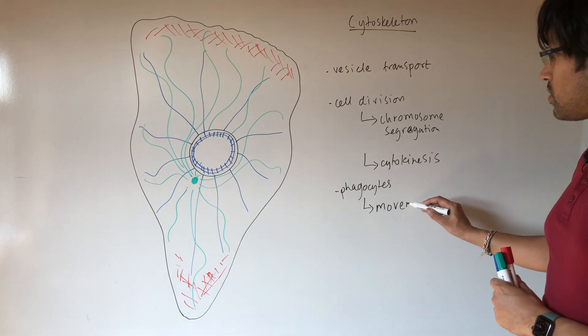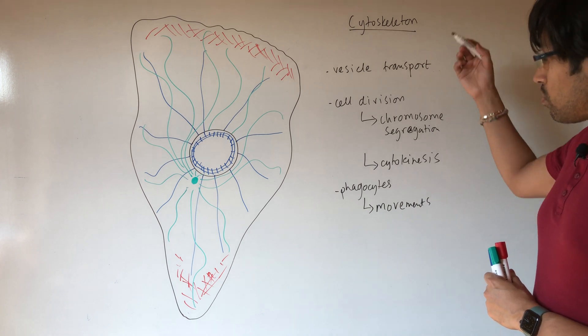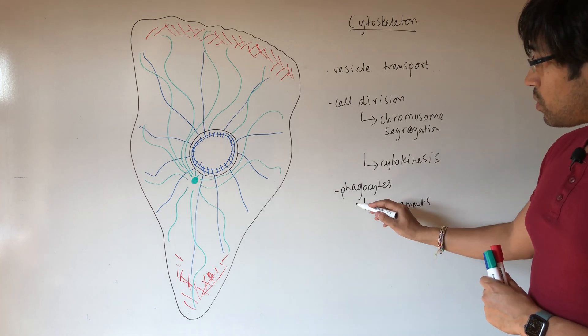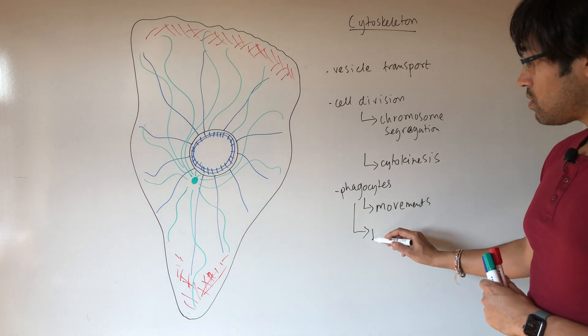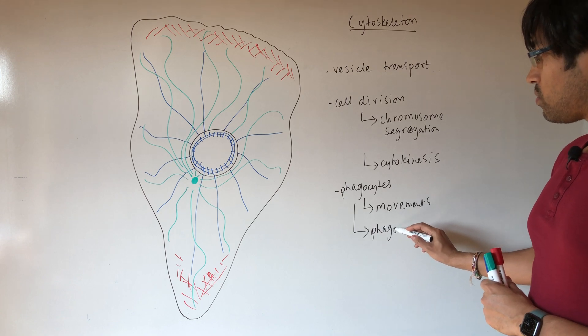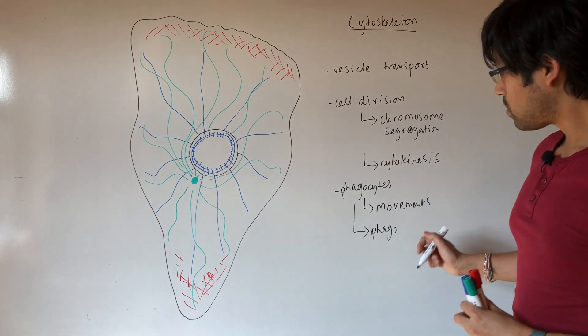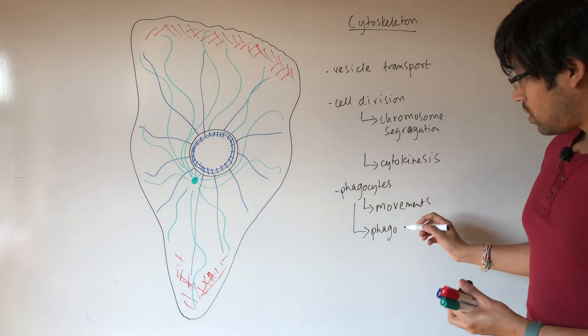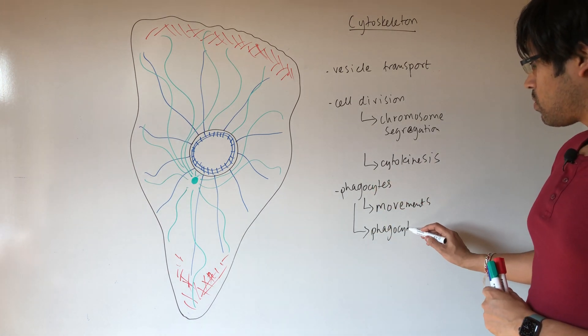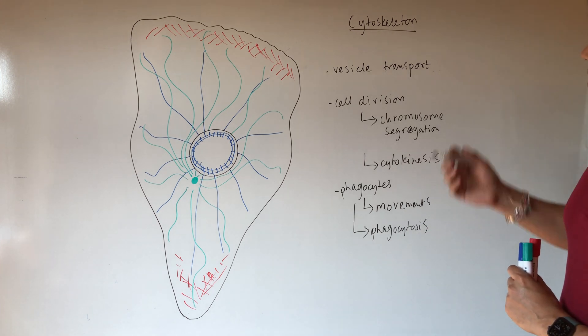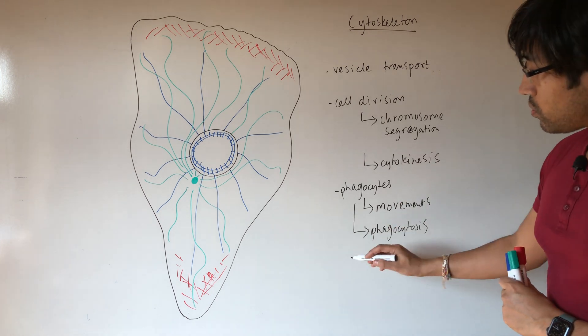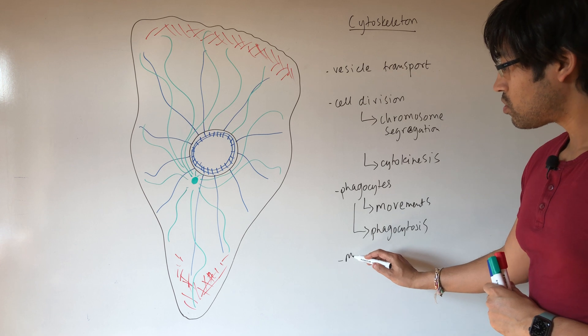Now movement of cells involves the cytoskeleton. In order to carry out phagocytosis, cells need to extend their membrane around the pathogen in order to do that. So phagocytosis is dependent on the cytoskeleton.